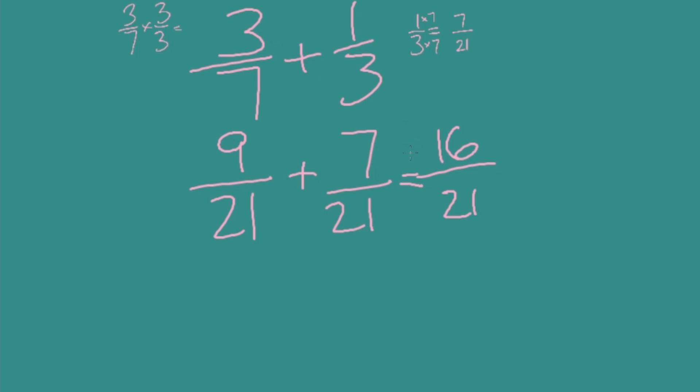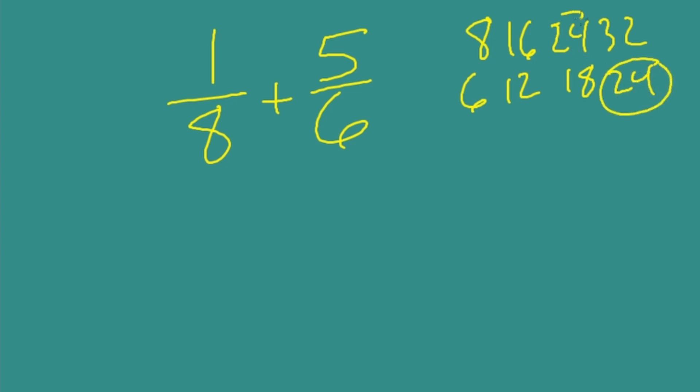One final example. Let's try 1/8 plus 5/6. Can we reduce? No. Writing out multiples of 8 and the multiples of 6. Well, 8, 16, 24, 32. Let's try 6, 12, 18. It's close. Not quite. Hey, 24. Let's do it. In this case, if I'd multiplied 8 times 6, I would end up with a denominator of 48. And would that work? Yes. But would that be like Sticky taking the long way to get there? Yeah, it would. There's a shorter way. So I'm going to use a denominator of 24.